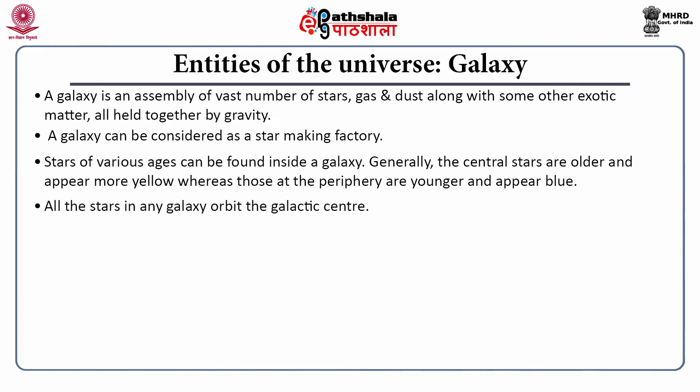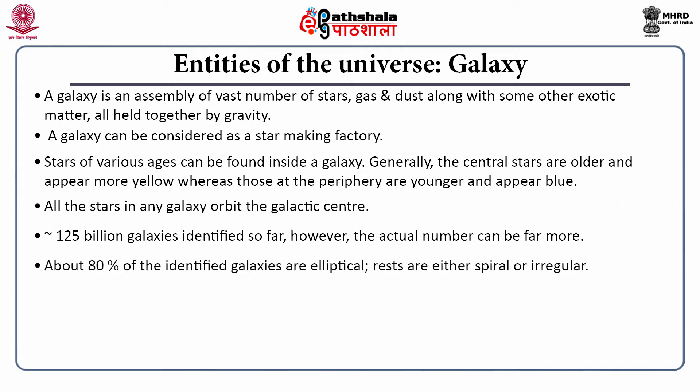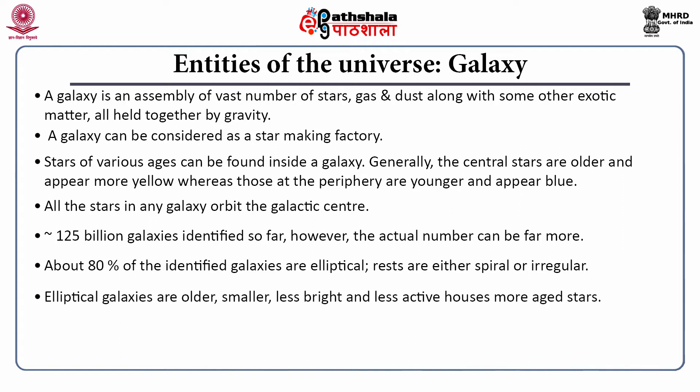All the stars in any galaxy orbit the galactic centre. So far, about 125 billion galaxies have been identified, though the actual number could be far more. About 80% of the identified galaxies are elliptical in shape; the rest are either spiral or irregular shaped. Elliptical galaxies are older, smaller, less bright and less active, and house more aged stars.